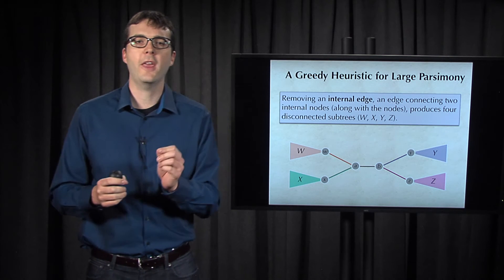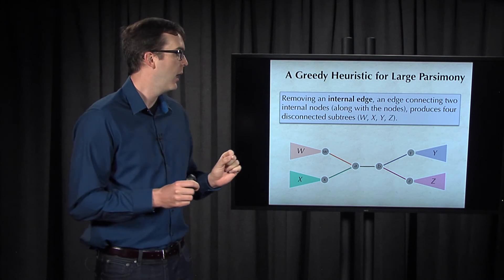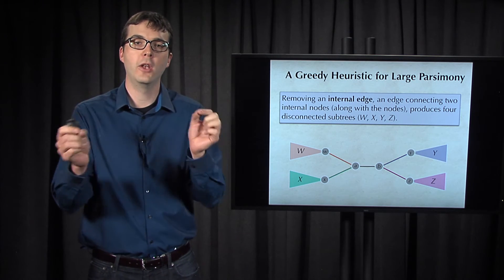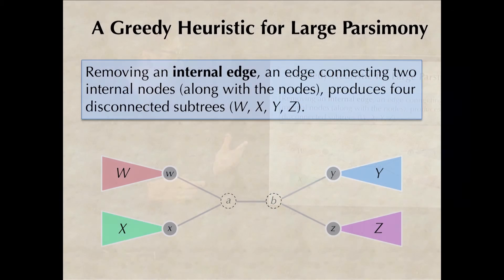First, I want you to think about removing an internal edge of an unrooted binary tree, that is, an edge that connects two internal nodes, along with the nodes that it connects. So for example, if we delete the edge connecting A and B here, along with the nodes A and B themselves,